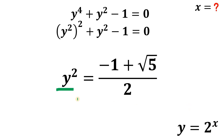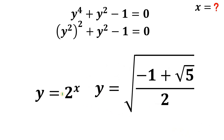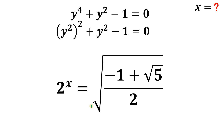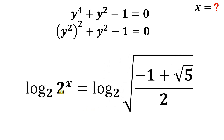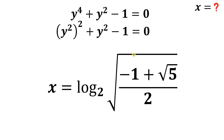We want the value of x, so we take the square root of both sides. Since y is greater than 0, we take the positive value: y equals square root of negative 1 plus square root of 5, all over 2. Since y equals 2 raised to the power of x, we take logarithm base 2 of both sides. The left-hand side simplifies to x, so x equals log base 2 of square root of negative 1 plus square root of 5, all over 2.